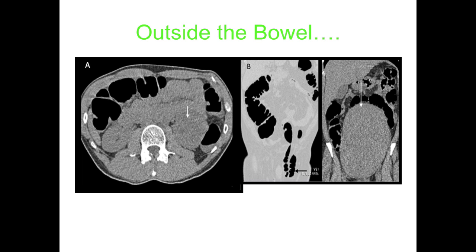Some examples of extra-colonic findings: on the non-contrast low-dose imaging you can see abnormal soft tissue in one area, and on the coronal view there's a huge pelvic mass taking up the entire pelvis and part of the abdomen — this is an ovarian lesion.